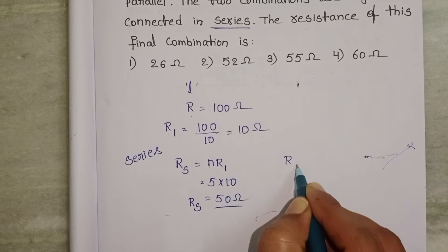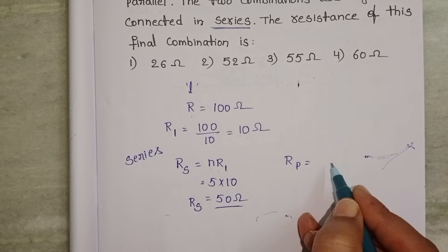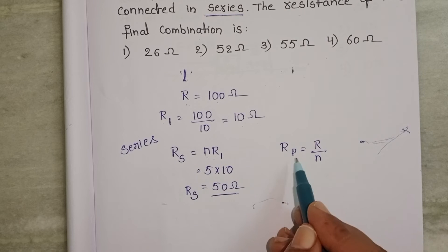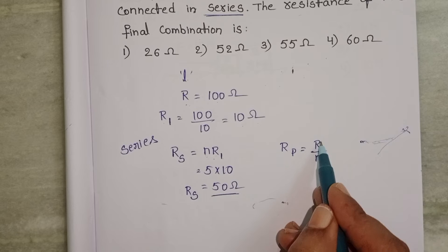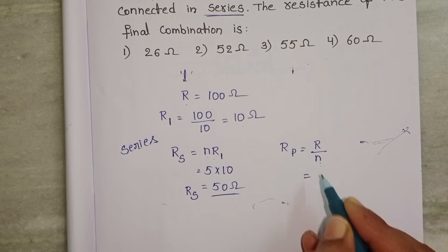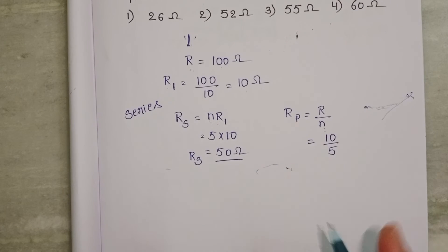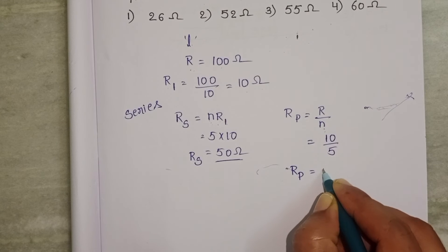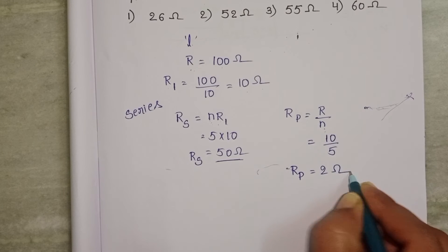Now the next 5 resistors are connected in parallel. When resistors of equal resistance are connected in parallel, the formula for equivalent resistance equals R by N. Here N equals 5, and each resistor is 10 ohm. So the equivalent resistance when connected in parallel equals 2 ohm.